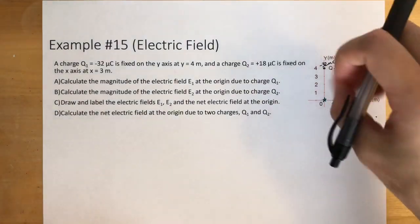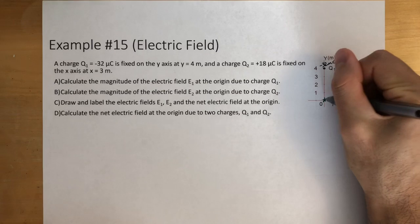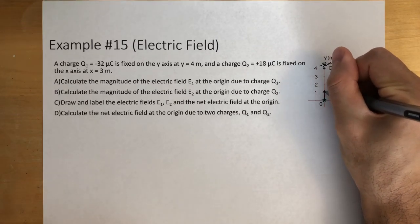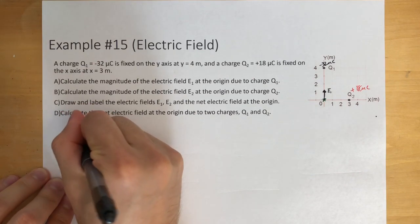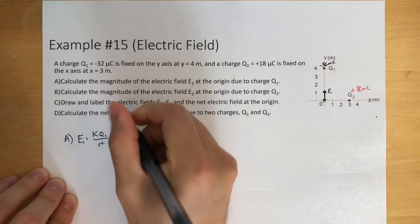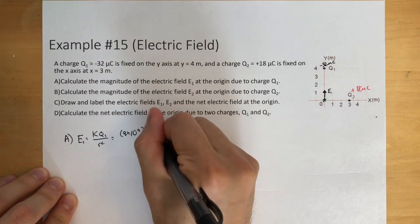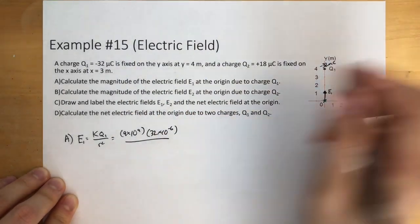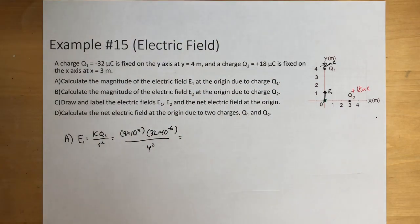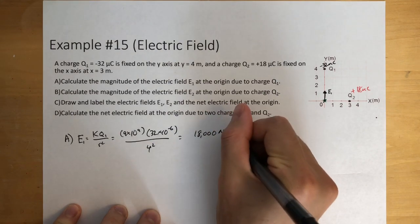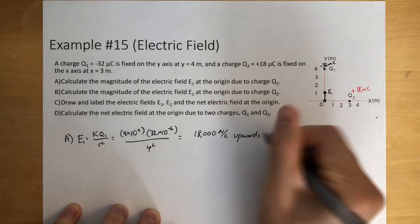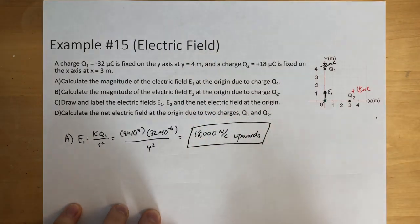We know charge 1 is negative, so everything goes inwards towards it. From the origin, the electric field is going to be going upwards toward Q1. So E1 equals k times Q1 over r squared: 9 times 10 to the 9th times 32 times 10 to the negative 6, divided by 4 squared. We get 18,000 newtons per coulomb, and this is going upwards.